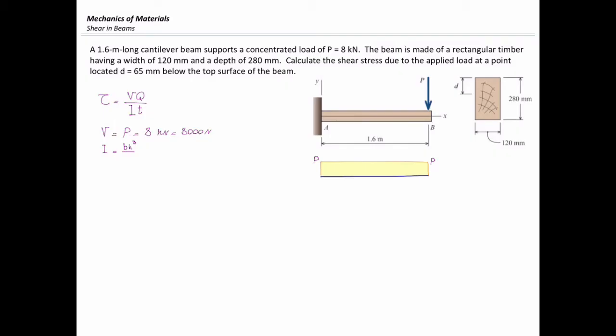The base of this rectangle is 120 mm and height of this rectangle is 280. And I can simply determine how much is the value of moment of inertia for this beam, which is equal to 219.5 times 10 to the 6 mm to the 4th.